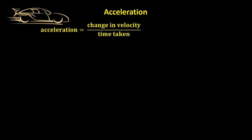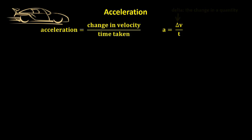Acceleration is the rate of change of velocity — in other words, how much an object changes its velocity per second. The formula for calculating acceleration is fairly simple: acceleration equals the change in velocity divided by the time taken. A equals delta V divided by T. The triangle is the Greek letter delta, the symbol used in mathematics to indicate the change in a quantity. So let's do an example.